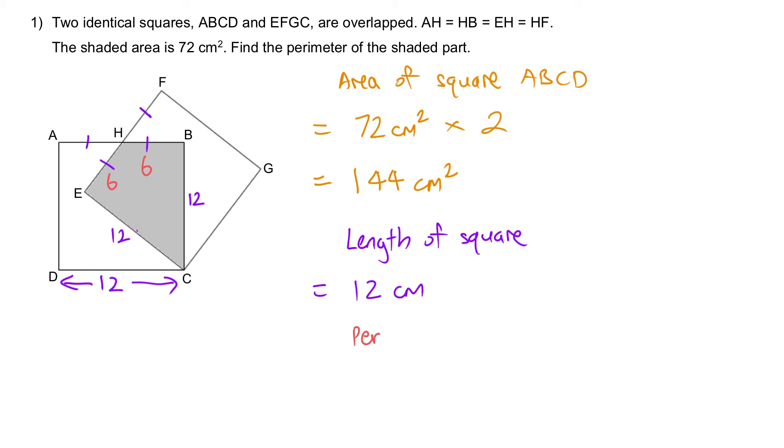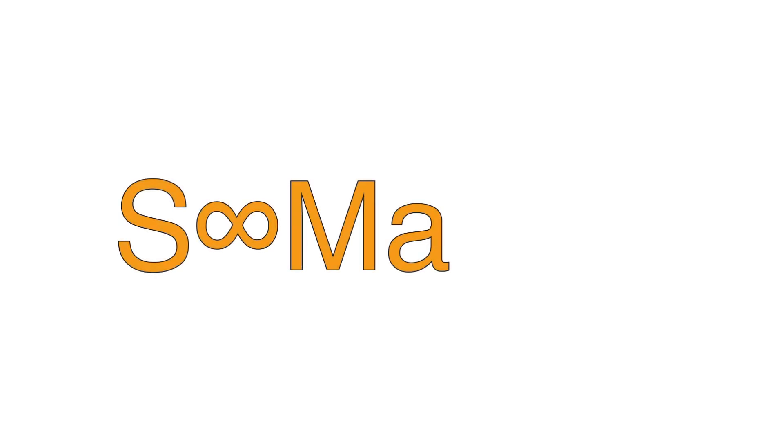Hence, the perimeter of the shaded part is equal to 12 plus 12 plus 6 plus 6. The whole thing, cm. That should give you 36 as the answer.